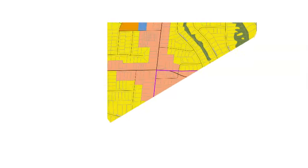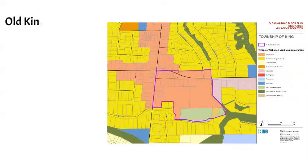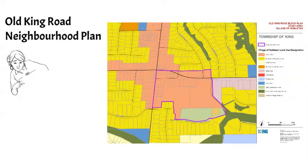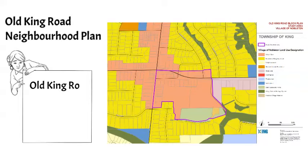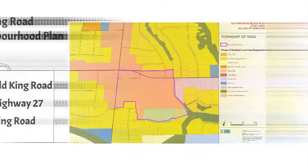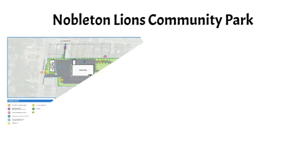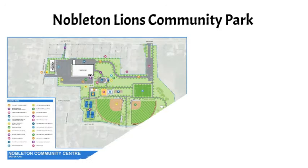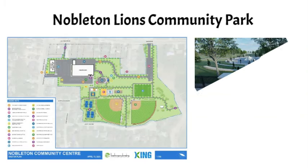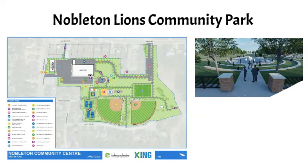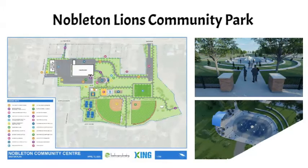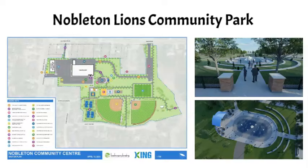For the village of Nobleton, the neighborhood plan is proposed to include lands in the southeast corner of Nobleton that front on Old King Road, Highway 27, and King Road. The study area is also proposed to include the Nobleton Lions Community Park. The township is also exploring possibilities for new recreational and cultural facilities in the park, which will be integrated into the neighborhood plan.